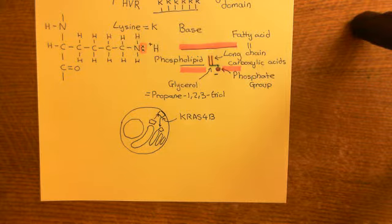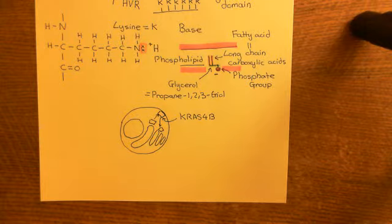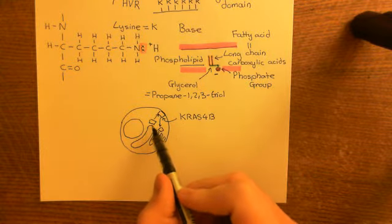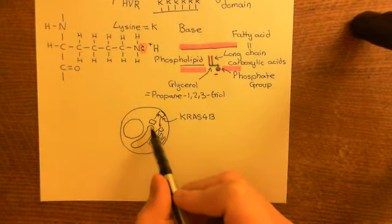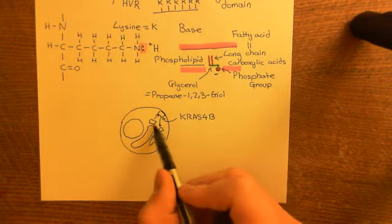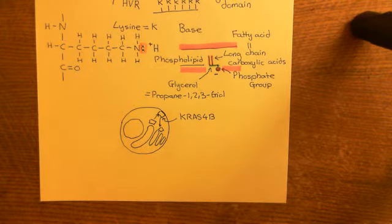We now turn attention away from KRAS-4B and discuss the other RAS proteins — HRAS, NRAS, and KRAS-4A. These all require an additional lipid molecule to be added onto them to leave the ER and go to the plasma membrane. Also note that KRAS-4B's movement from the ER to the plasma membrane was Golgi-independent — it didn't involve the Golgi. Removing the Golgi would not prevent KRAS-4B from reaching the plasma membrane.